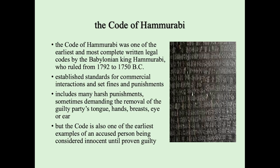The Code of Hammurabi includes many harsh punishments, sometimes demanding the removal of the guilty party's tongue, hands, breasts, eye, or ear. So you can see that punishments were quite cruel. But at the same time, the code is also one of the earliest examples of an accused person being considered innocent until proven guilty. The Code of Hammurabi is a good example of the most complete written legal codes in history.